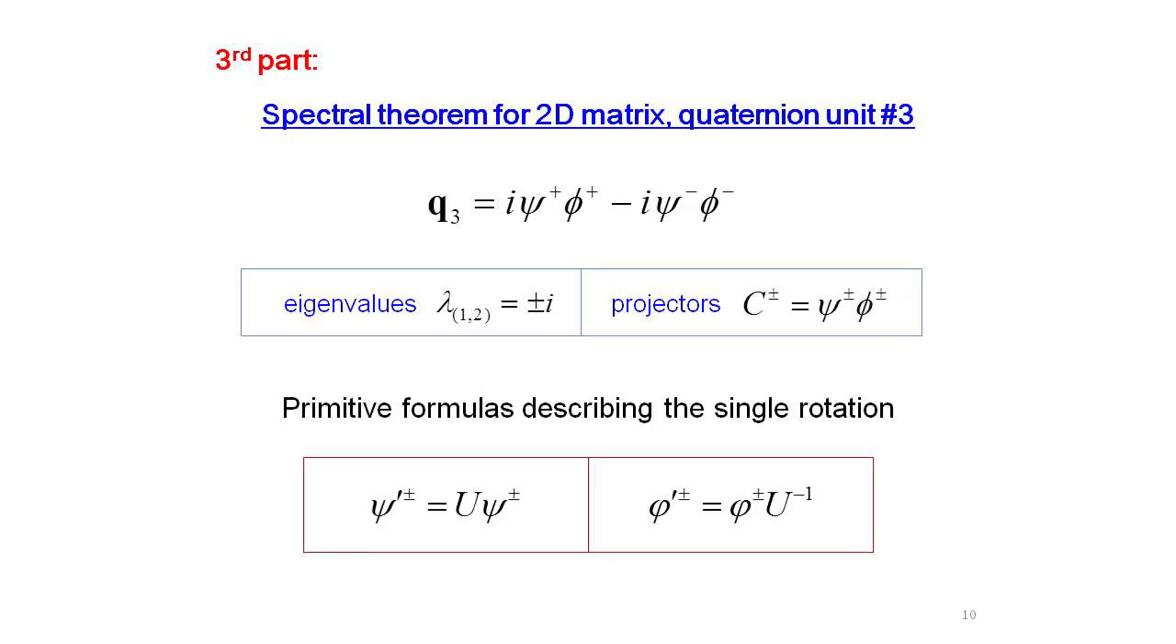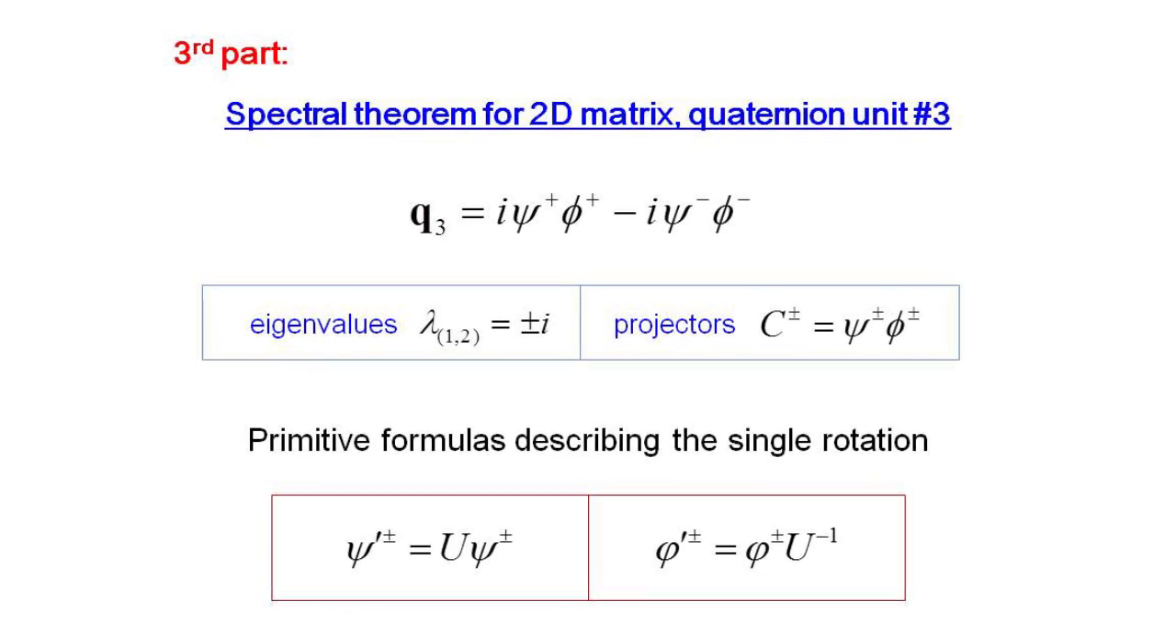In the third part of the paper, applications of the spectral theorem to two-dimensional matrices representing vector quaternion units gives much simpler mathematical expressions, namely square roots from similarity transformation, and these primitive formulas are equivalent to those of the single rotation method.